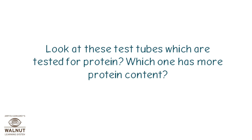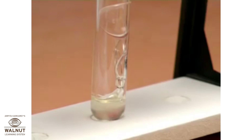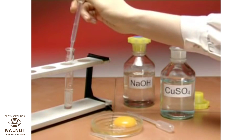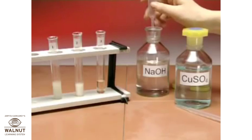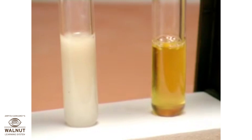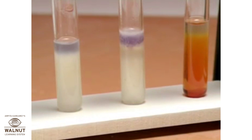Look at these test tubes which are tested for protein. Which one has more protein content? This is called the biuret test. It involves adding some sodium hydroxide solution, then running some very dilute copper sulfate solution down the side of the tube. At the top of the mixture, the colour change to mauve shows that protein is present. So, which of these will test positive for protein? Bread in tube 1, nuts in tube 2, and grape juice in tube 3. Both the bread and nuts contain protein. Which contains more?